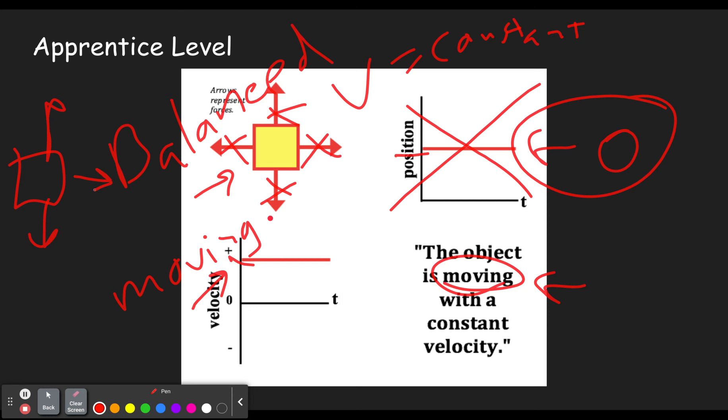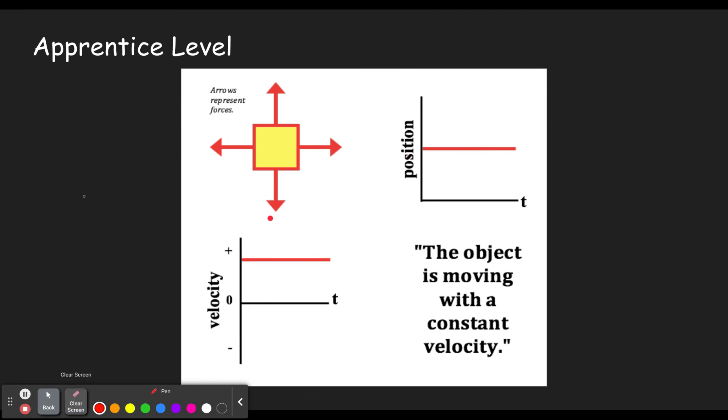A free body diagram that is unbalanced in the apprentice level, that's going to be wrong. As we move into the master and the wizard level though, that just means that there's an acceleration. The velocity is changing in that direction. Let's get onto that master level.